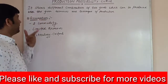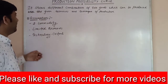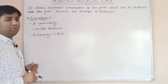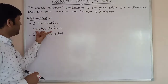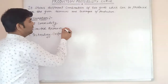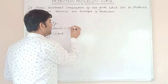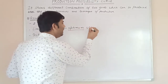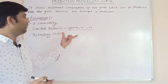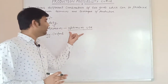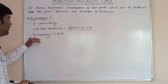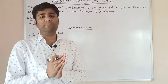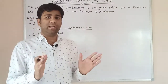In our economy, there are 2 commodities produced. Resources are limited, and resources should be used optimally — meaning resources should not be wasted; only sensible use should be made. Next, technology is constant — there are no changes in technology.